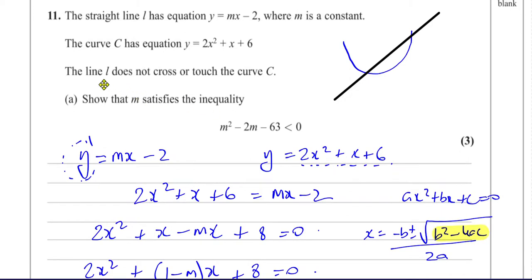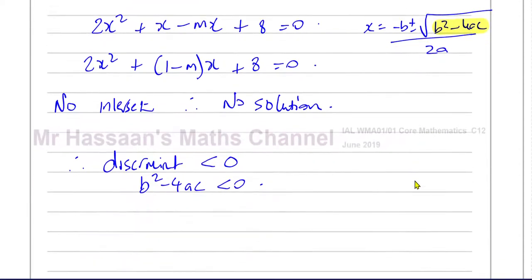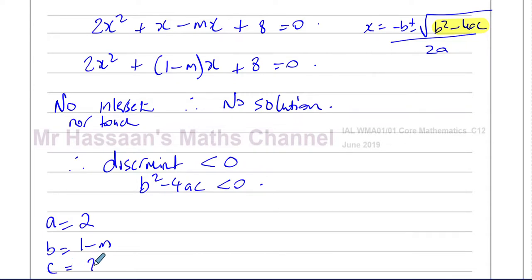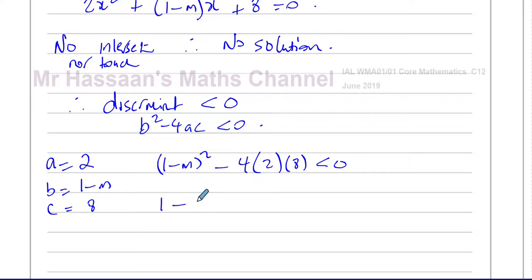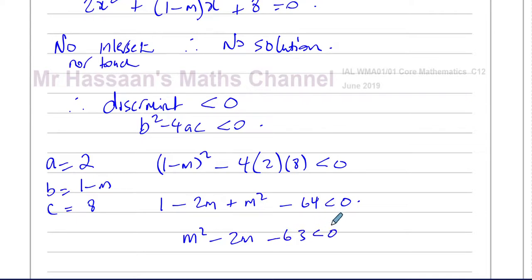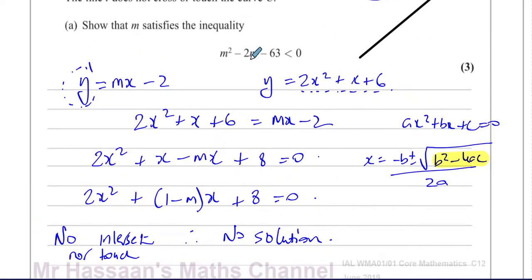Since the line L does not cross nor touch the curve, the discriminant is negative — not equal to zero, not positive. So B squared minus 4AC is less than 0. Here A equals 2, B equals 1 minus M, and C equals 8. Substituting: (1 minus M) squared minus 4 times 2 times 8 is less than 0. Expanding gives 1 minus 2M plus M squared minus 64 less than 0, leaving M squared minus 2M minus 63 less than 0 — which is what we had to show.